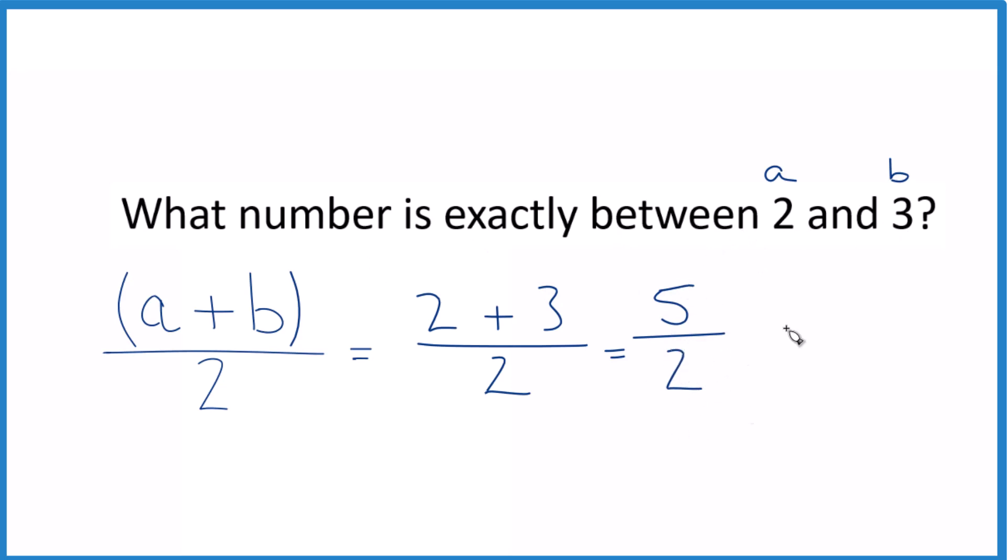This is an improper fraction, so we could change this to a mixed number. 2 goes into 5 two times with one left over, and then we bring the 2 across.